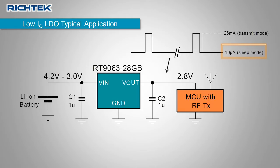When the microcontroller and RF section become active, the load momentarily goes up from 10 microamp to 25 milliamp.